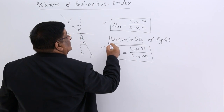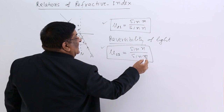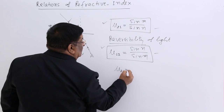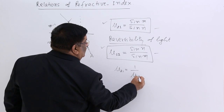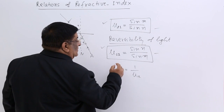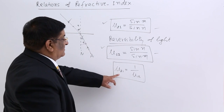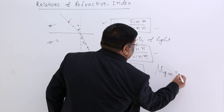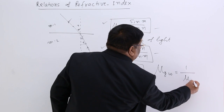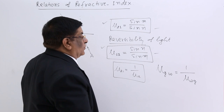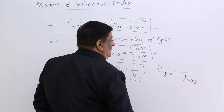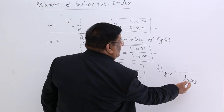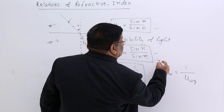Now see these two relations: sin M upon sin N, and sin N upon sin M. Applying them mathematically, mu 2 1 is equal to 1 upon mu 1 2 — they are the inverse of each other. Always remember: mu of glass with reference to water is equal to 1 upon mu of water with reference to glass. So if mu of glass with reference to water has a certain value, invert it and that will be the value of mu water with respect to glass.